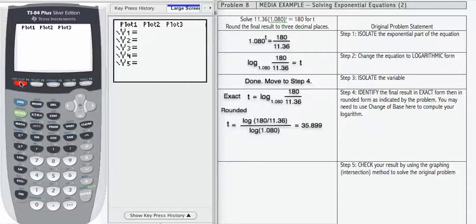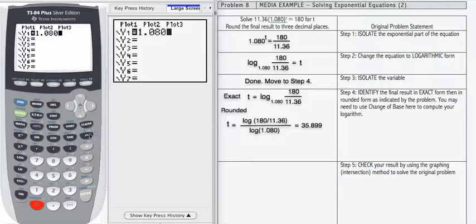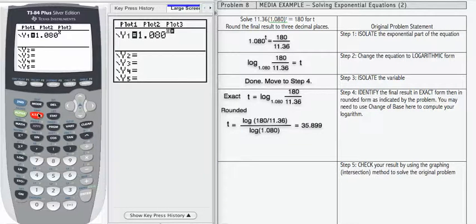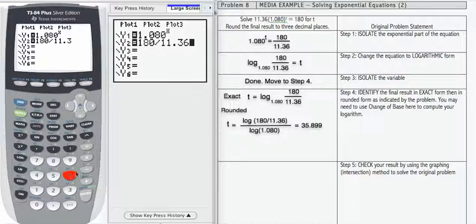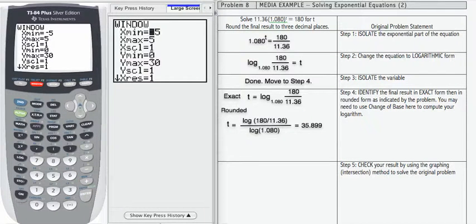Now we're going to use our y equals and intersect method to try and work with the checking of this. I'm going to enter 1.080 to the x as our y1 and y2 is going to be 180 divided by 11.36. Now for my window, I'm going to use something similar to what I did before. For x, I'm going to take that from negative 10 up to 50, because I know my answer is going to be about 35. Y is going to go from 0 to 30.